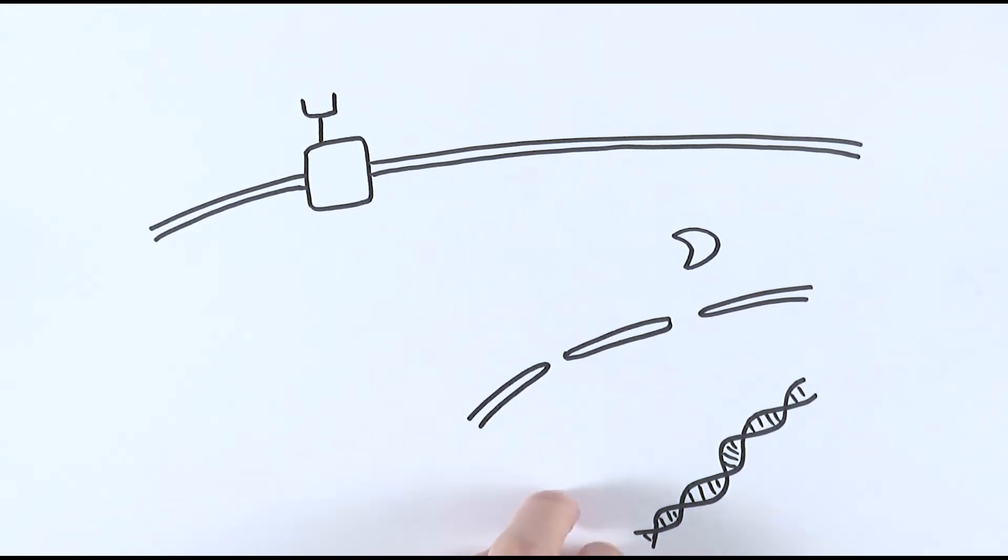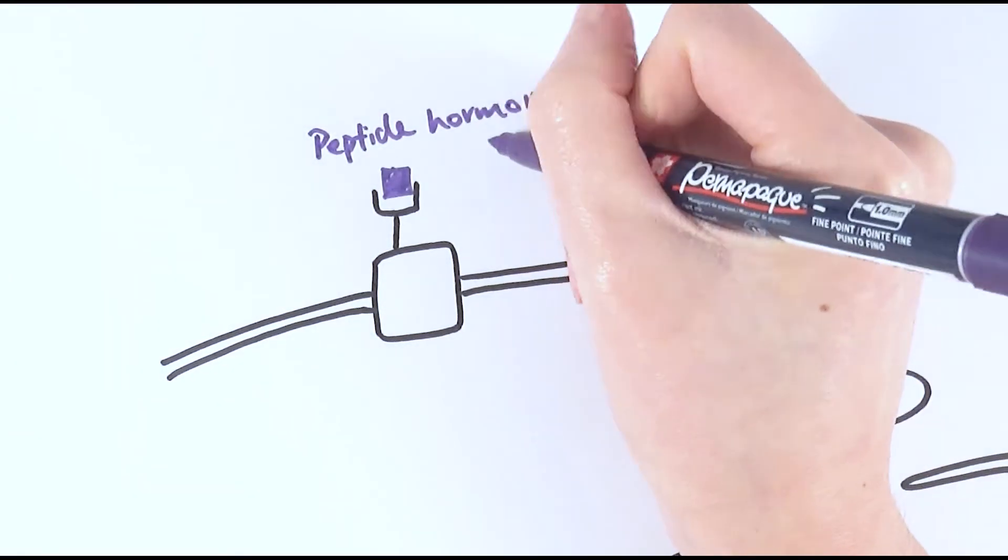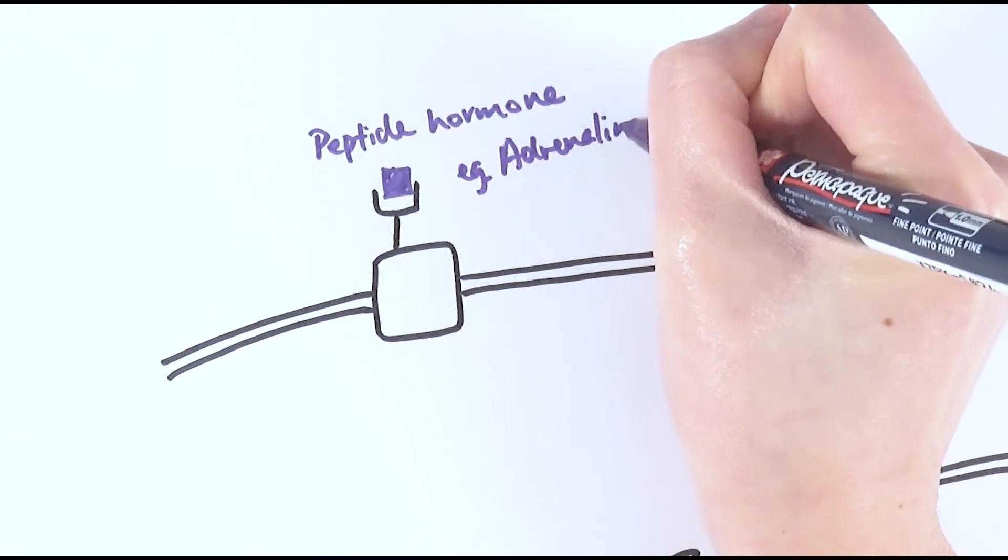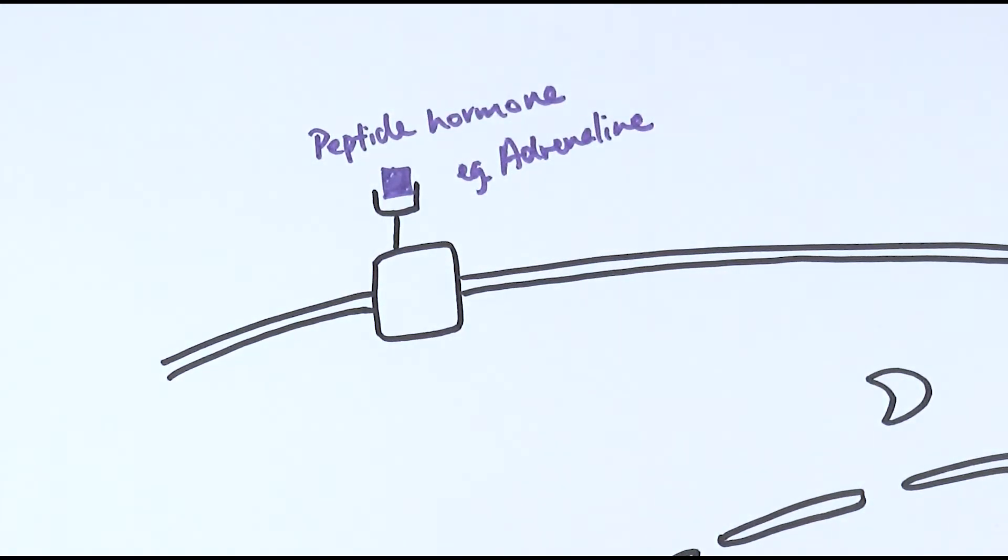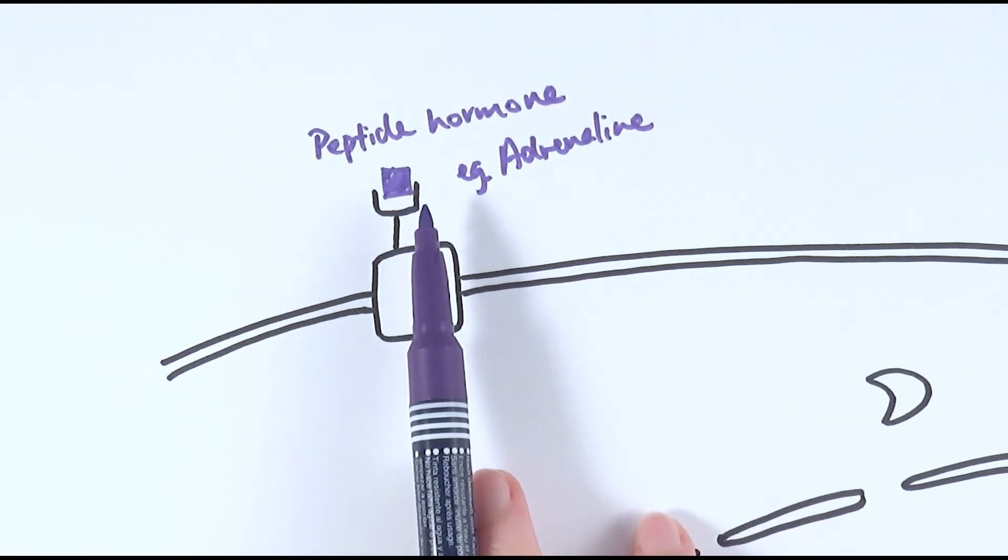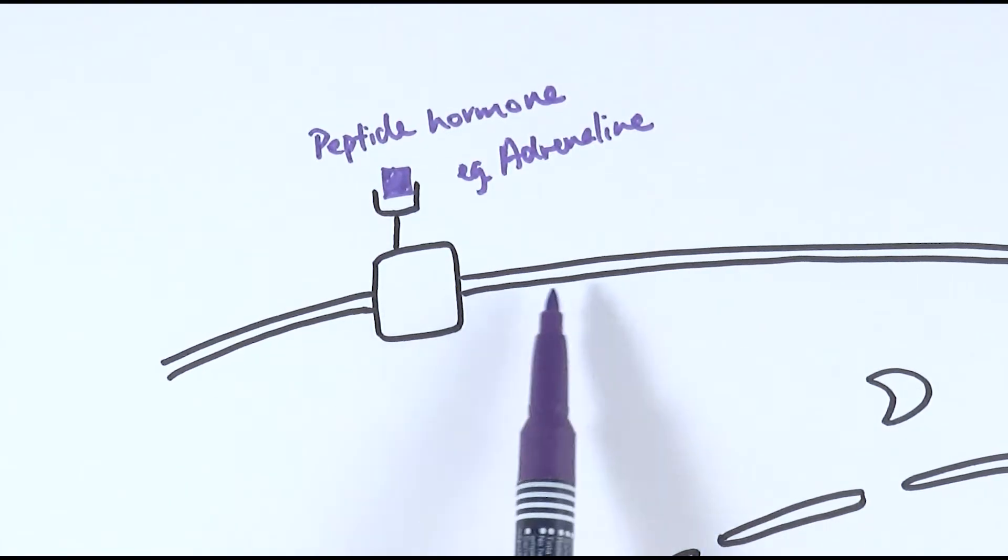The first type I'm going to talk about is the peptide hormones. In this case an example of a peptide hormone would be adrenaline, and as you know adrenaline usually is released during fight-or-flight responses or stress responses, but we'll come back to adrenaline another time. In this case it's a peptide hormone meaning it is hydrophilic.